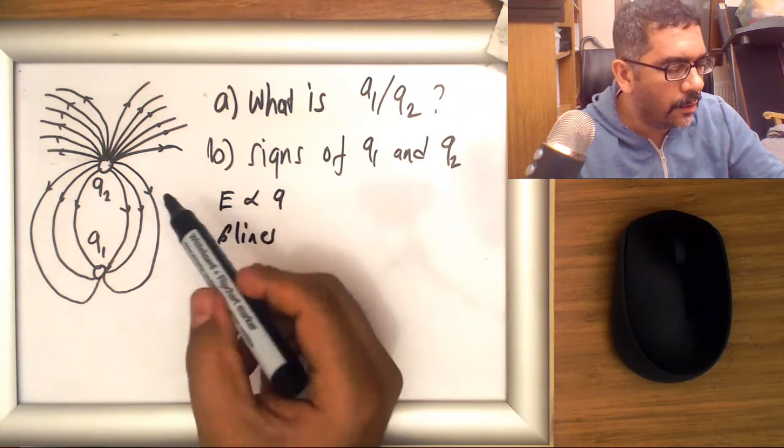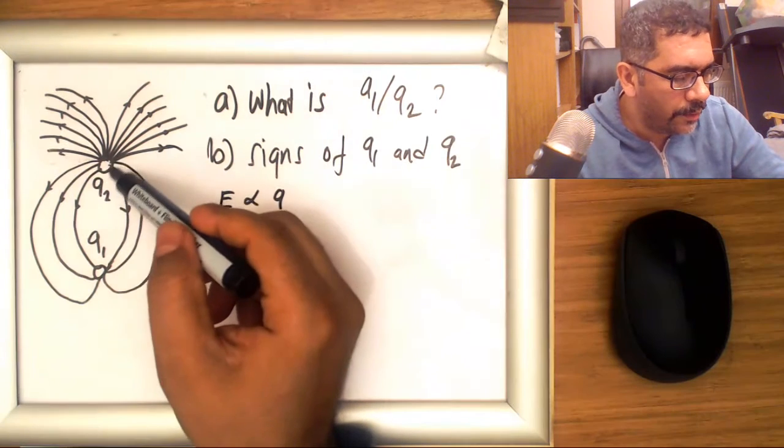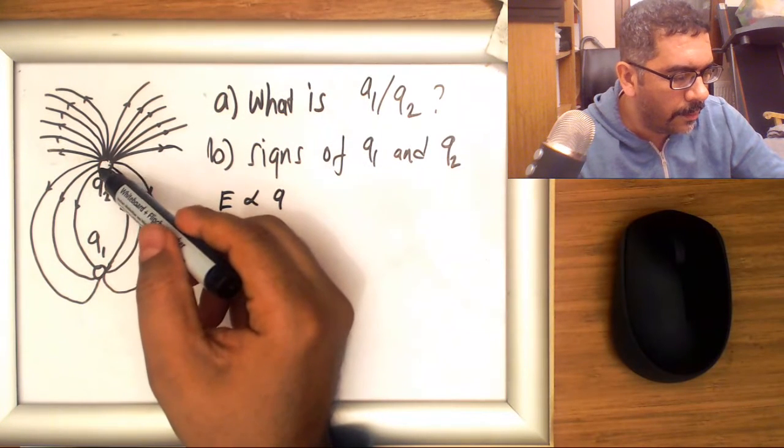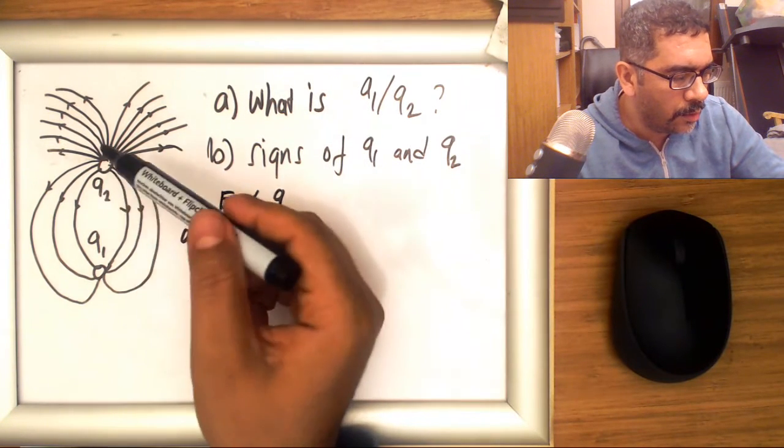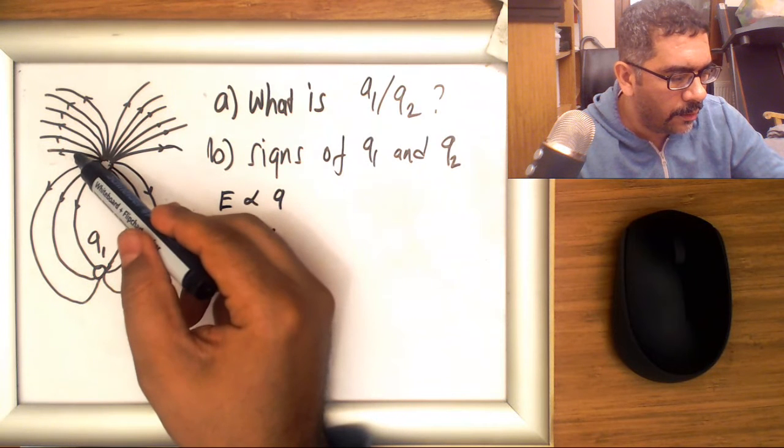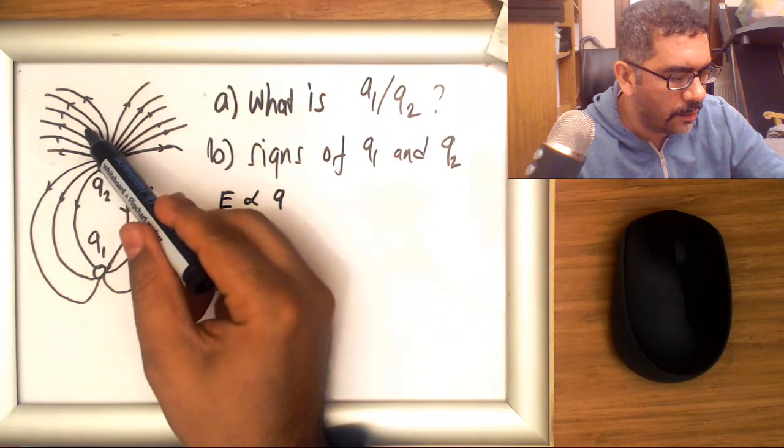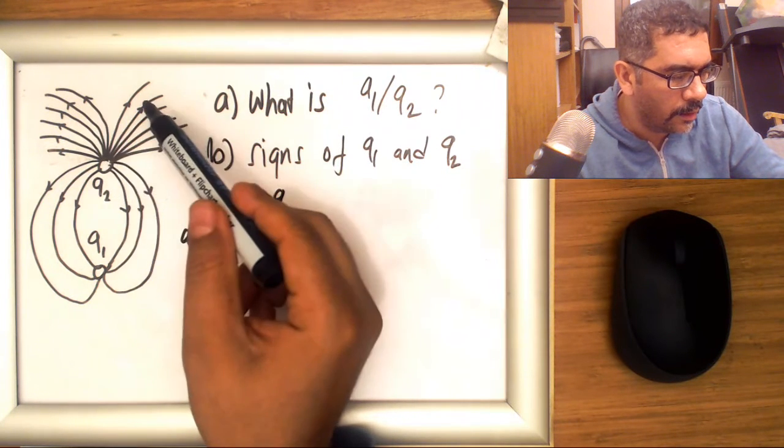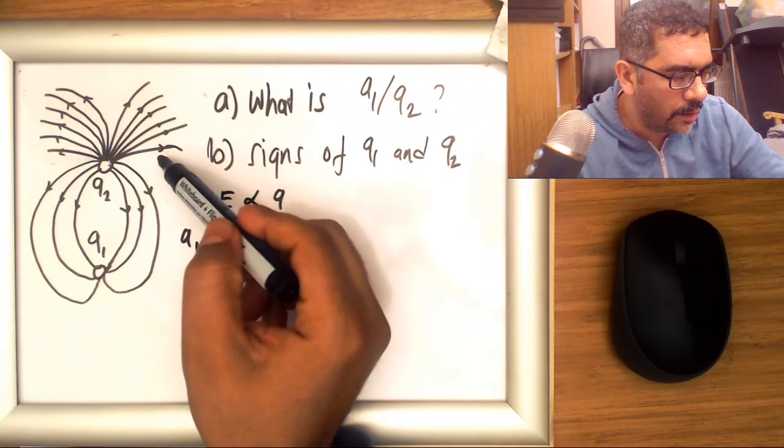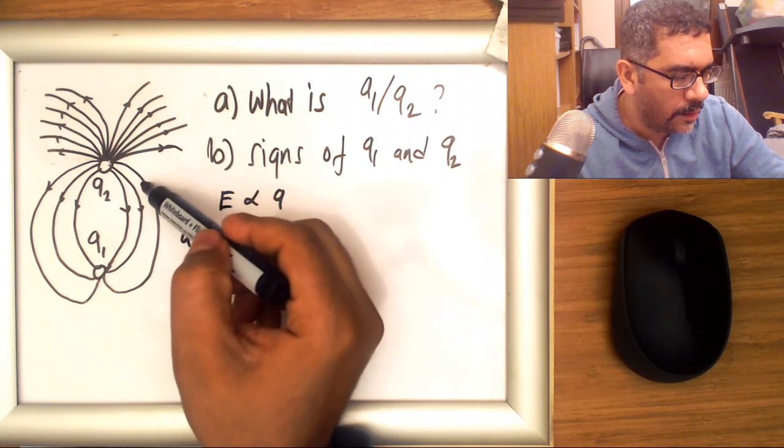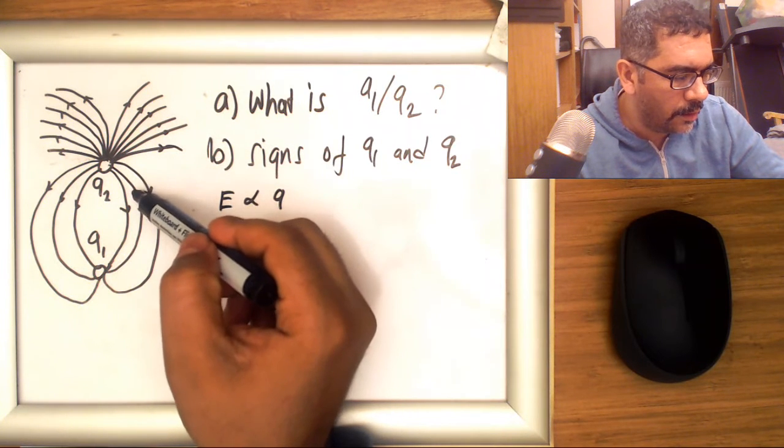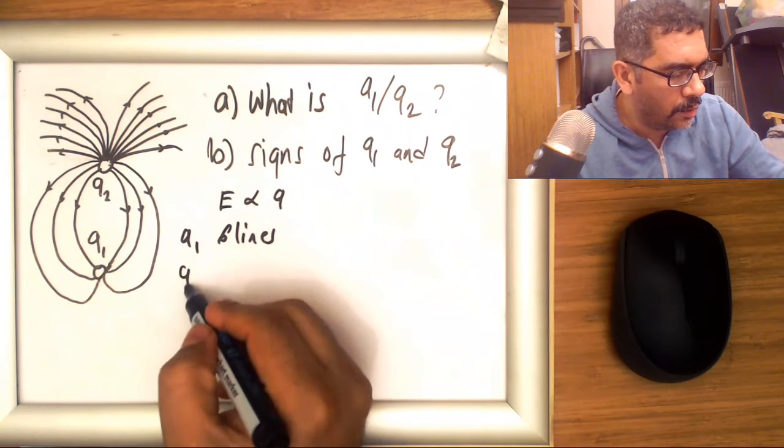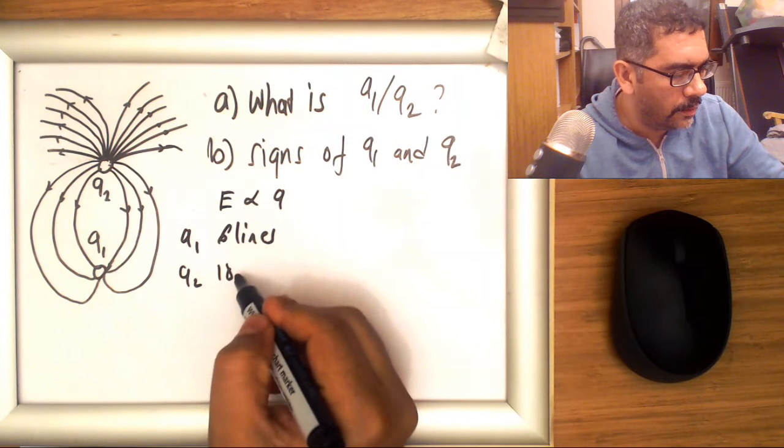If you count the number of field lines emerging from q2: one, two, three, four, five, six, seven, eight, nine... and six over here makes 15, 16, 17, and 18. So q2 has 18 lines.